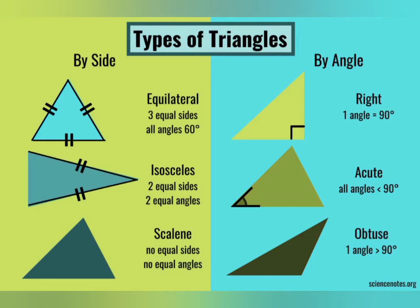Triangle classification by sides: Equilateral triangle has three equal sides and all interior angles are 60 degrees. Isosceles triangle has two equal sides and two equal angles. Scalene triangle has no equal sides and no equal angles.